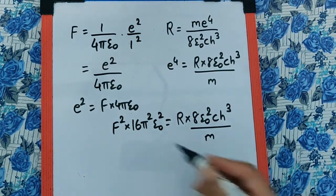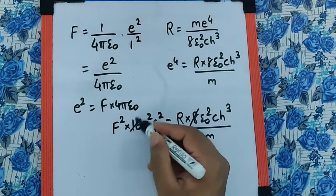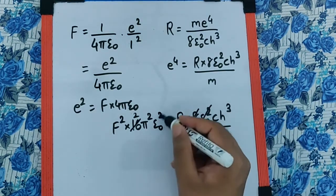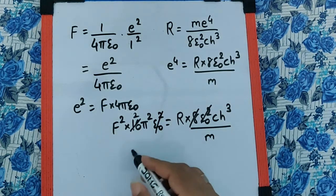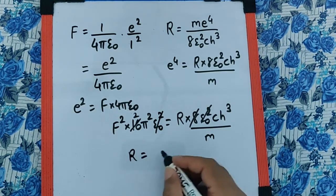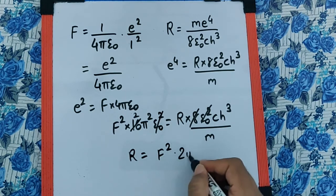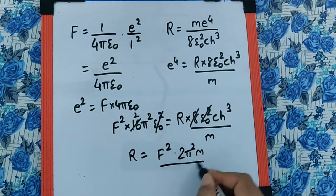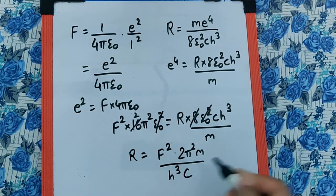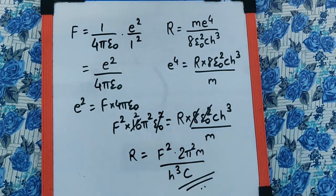So now if we do the cancellations, we can say 8 into 2 is 16, ε₀² completely cancels, and so we get R as F² into 2π² M upon H³C, and that is your final answer.